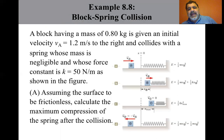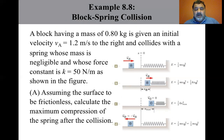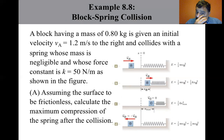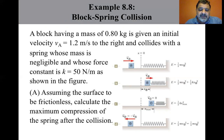Now let's look at a block and spring example. A block of mass 0.8 kilograms is given an initial velocity V_A of 1.2 meters per second to the right and collides with a spring whose mass is negligible and whose force constant is K equals 50 newtons per meter. Part A: assuming the surface to be frictionless, calculate the maximum compression of the spring. All motion is horizontal, so there's no gravitational potential energy change — only kinetic and spring potential energy. Before the collision, the total mechanical energy is one-half M V_A squared.